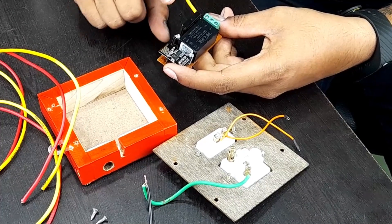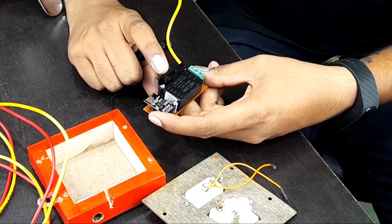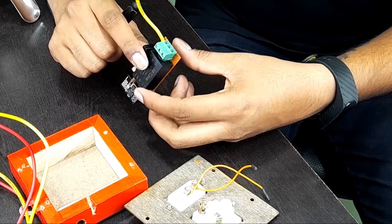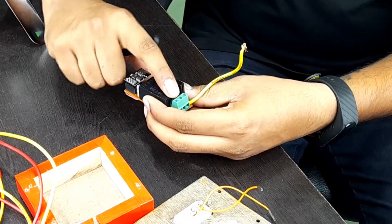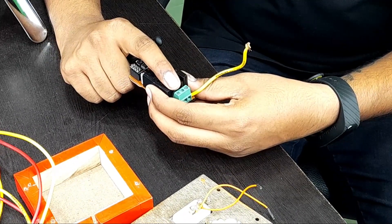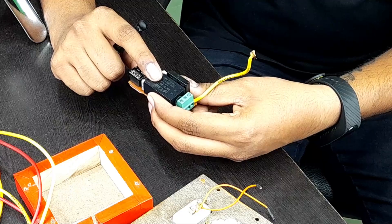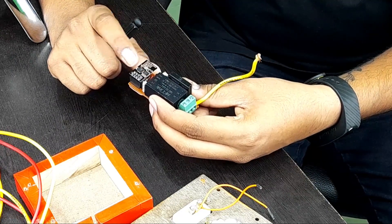What happens is the mains power comes in through these terminals and it powers the Hi-Link power block which outputs five volts.